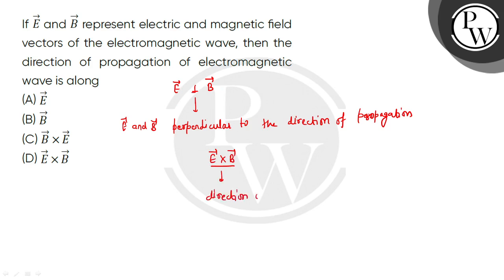So, what is the direction of propagation? The direction of propagation is along E × B. We can say that option D would be the correct choice. I hope you understood. Thank you so much.